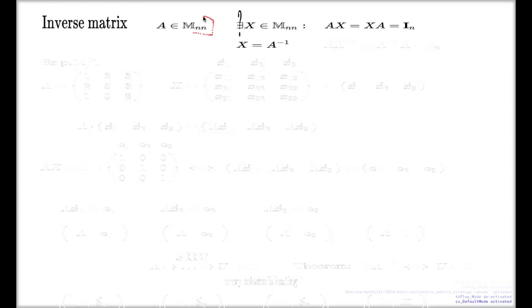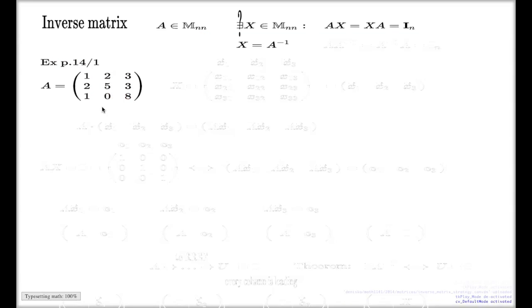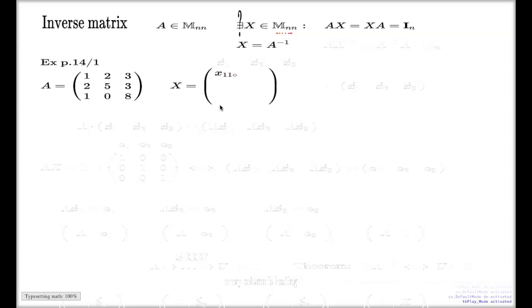Let me show you the strategy by an example. I'll take a 3×3 matrix — one of the examples from the lecture notes, page 14. I won't be doing computations with these numbers right now, but just to give a concrete example. I'll take you through the steps that justify the method of finding the inverse. So we're looking for the inverse X, which will be a matrix of the same size n×n. Let me give names to the entries of this unknown matrix.